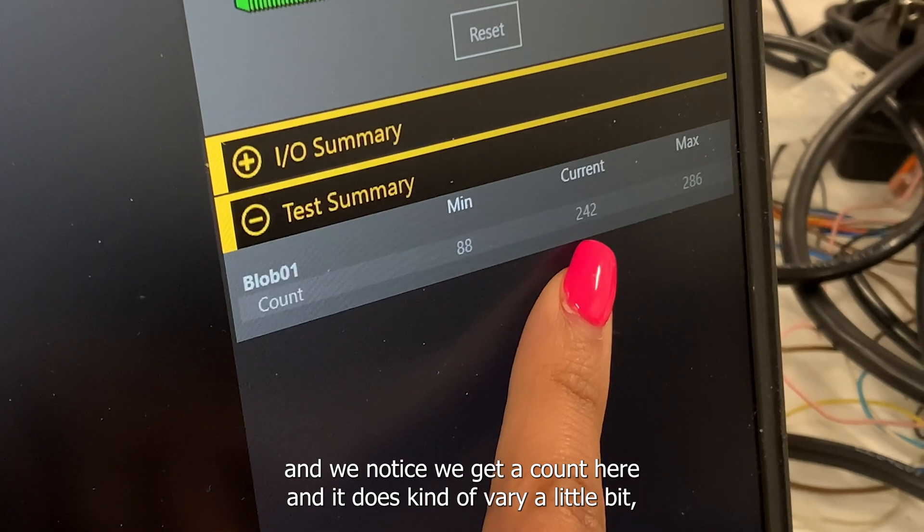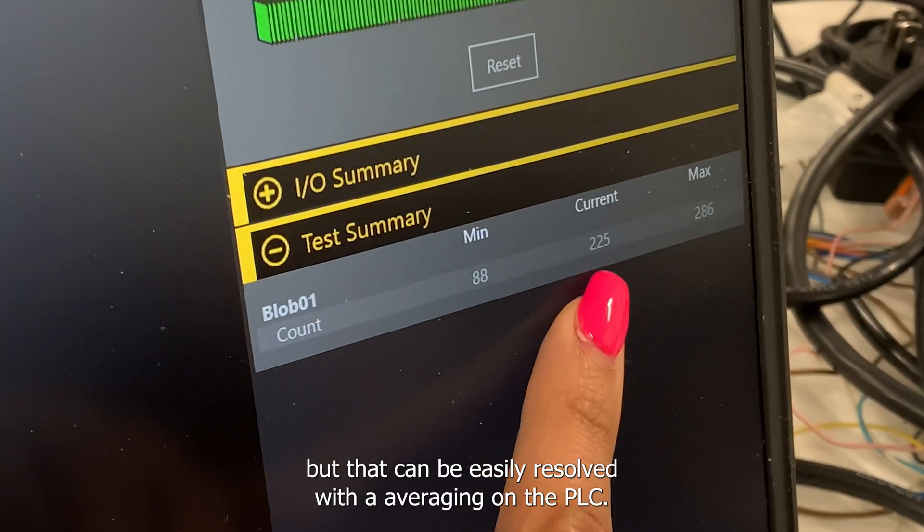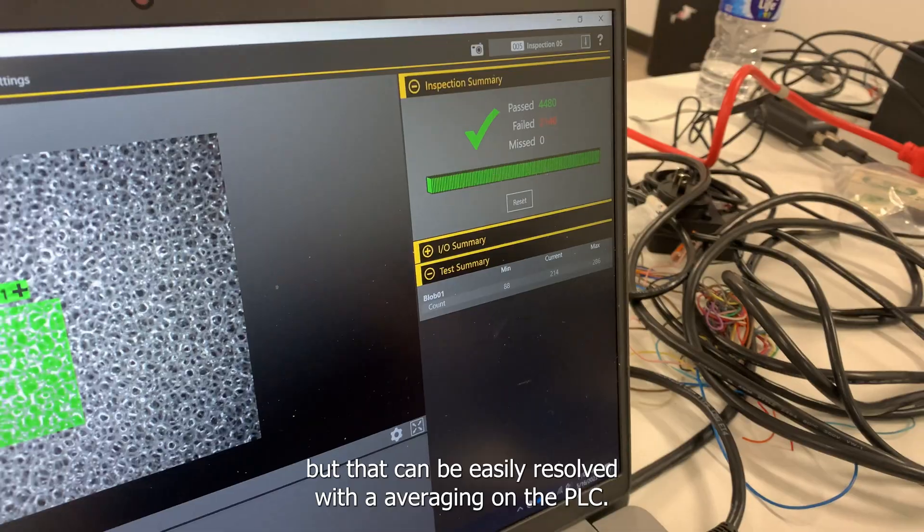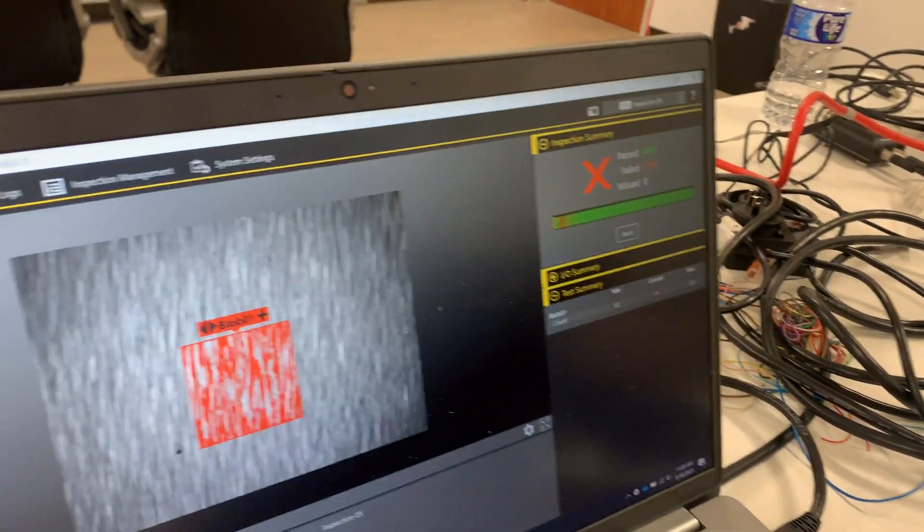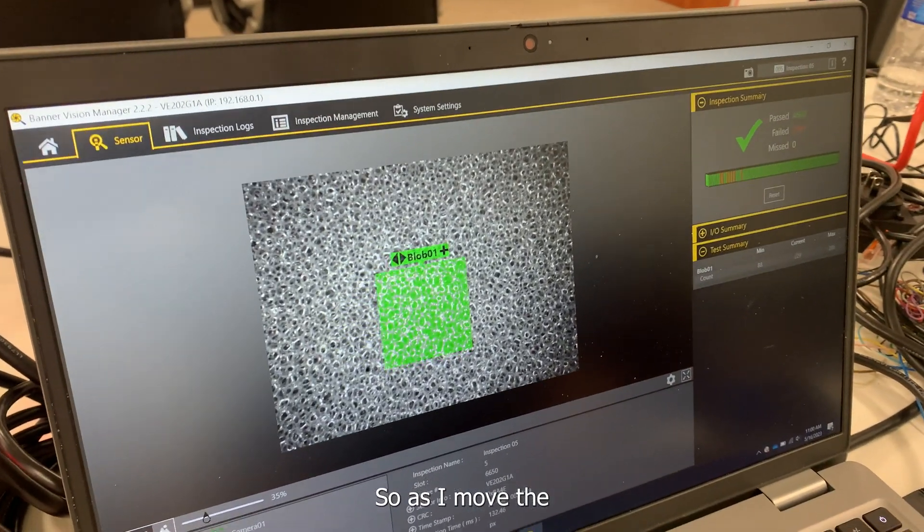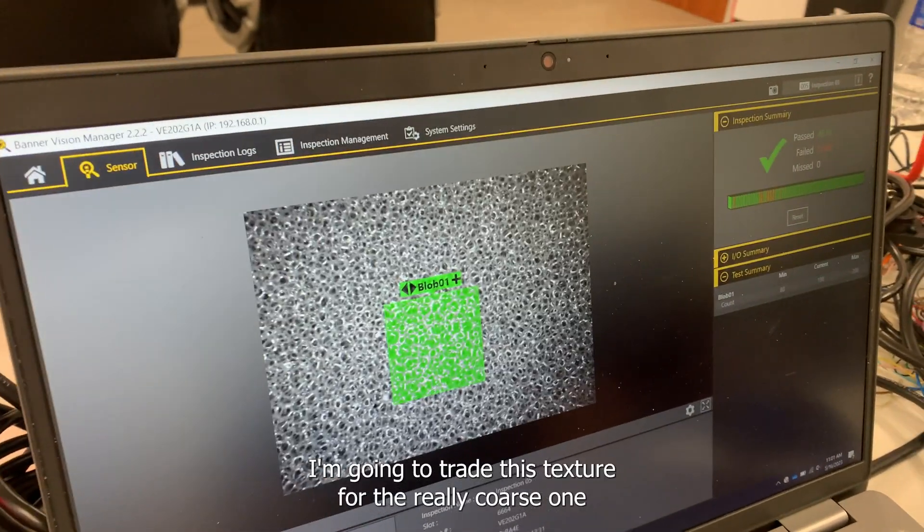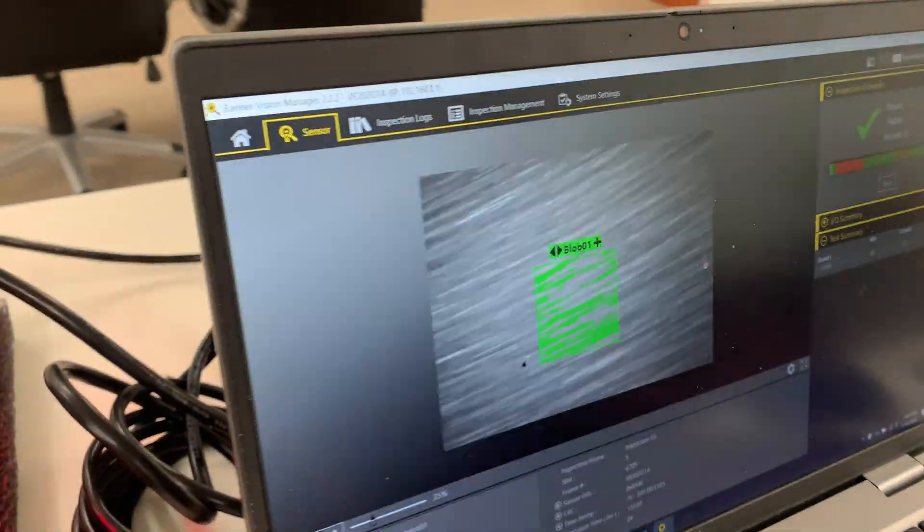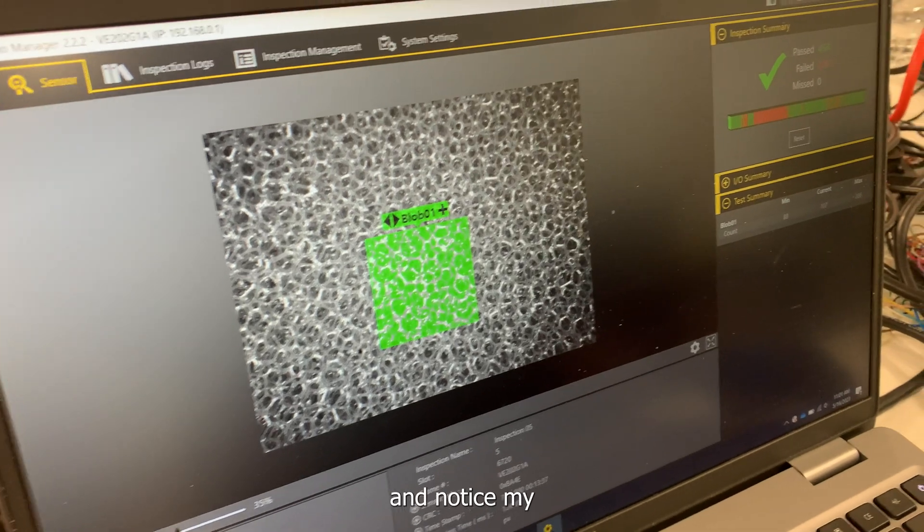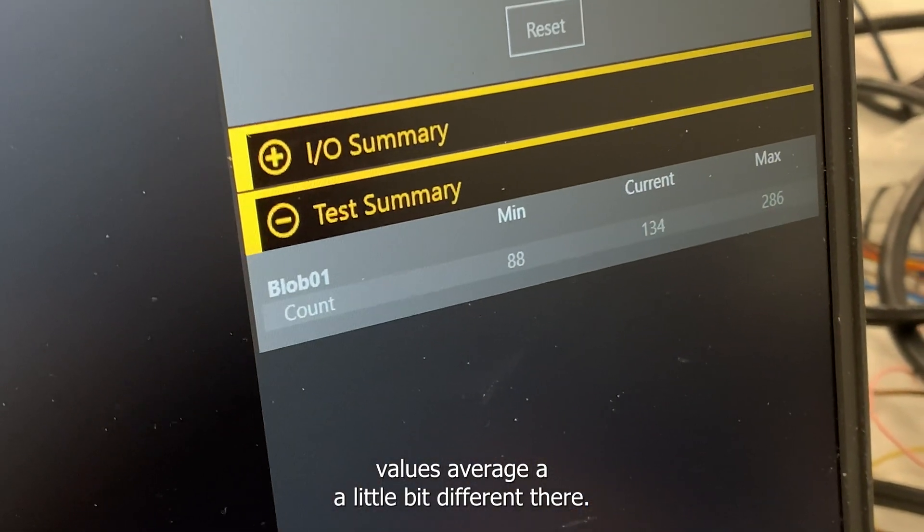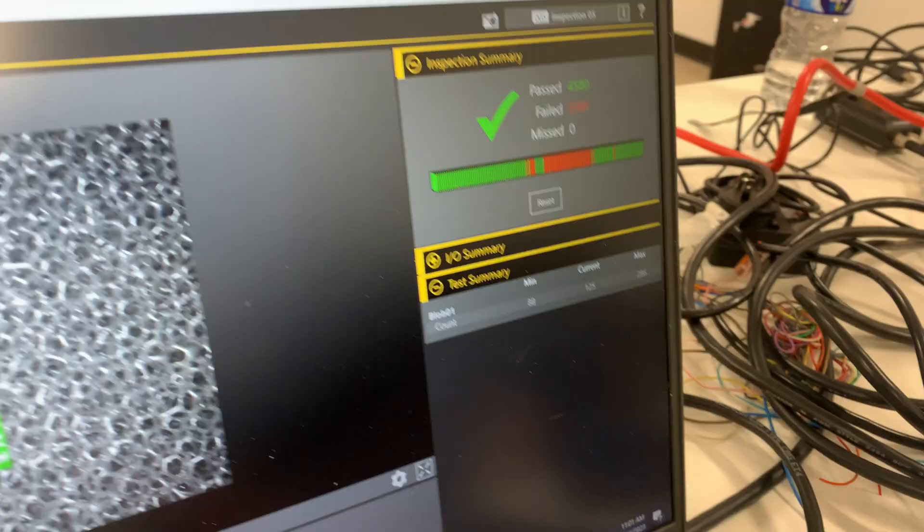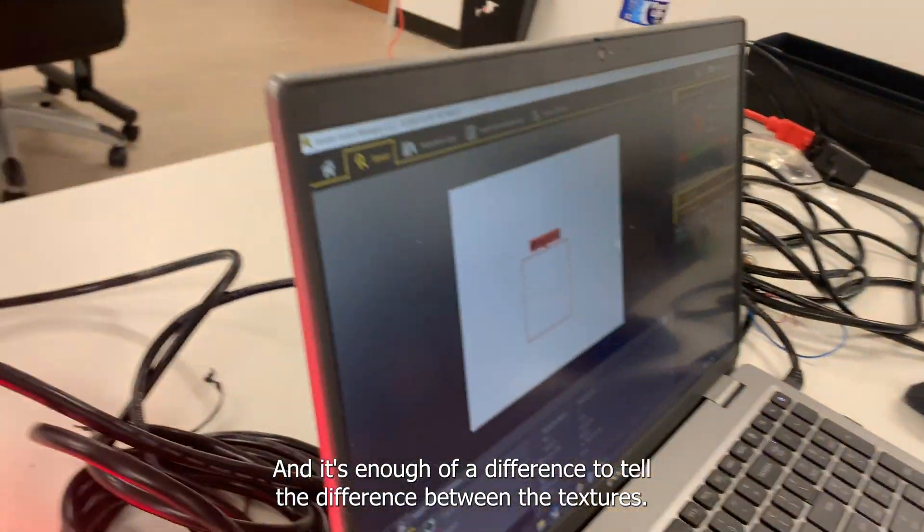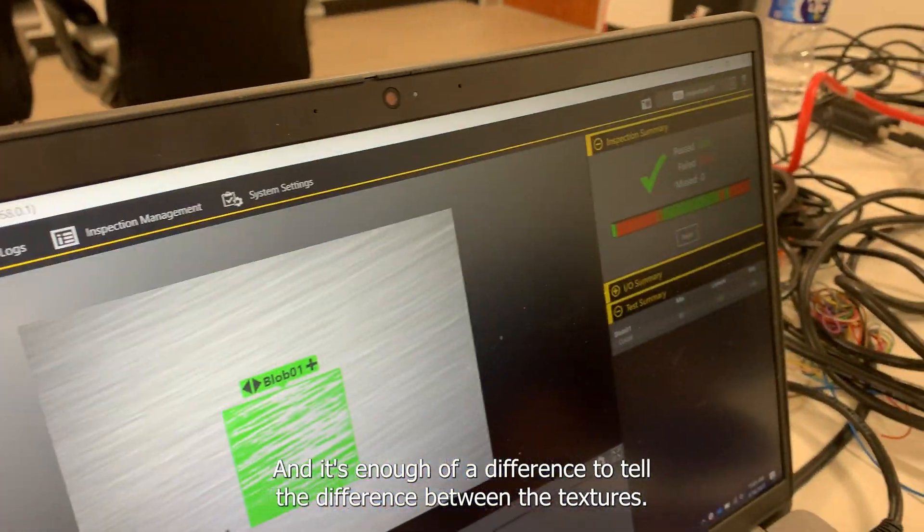As I move this, I'm going to trade this texture for the really coarse one. Notice my values average a little bit different there, and it's enough of a difference to tell the difference between the textures.